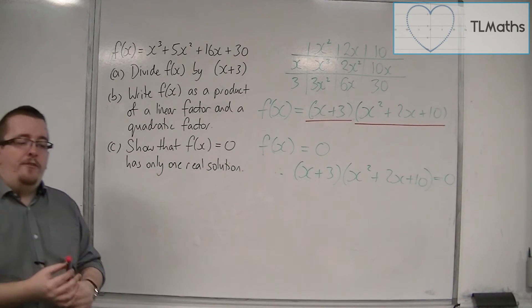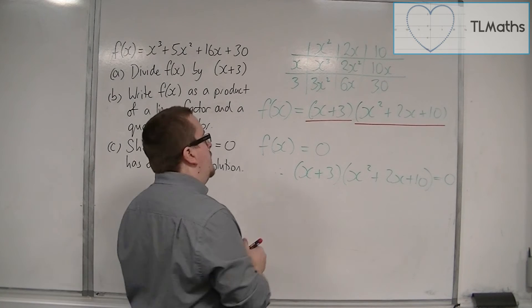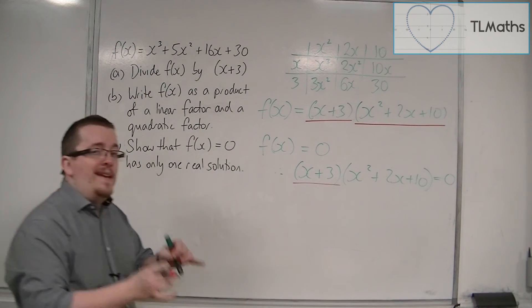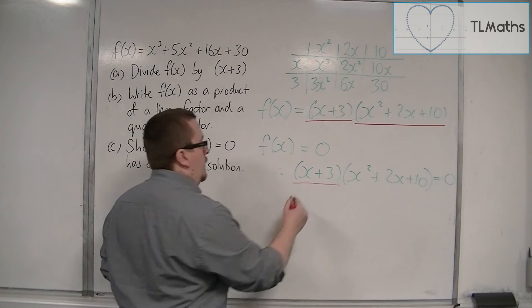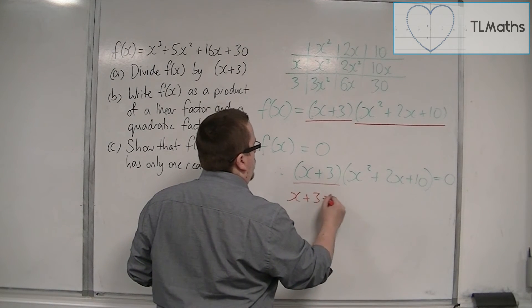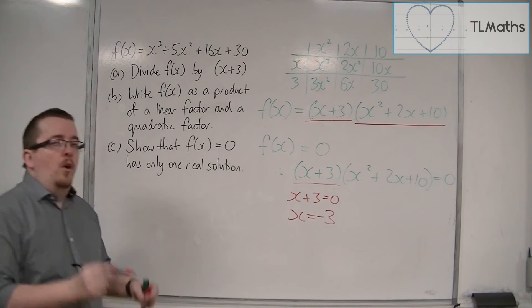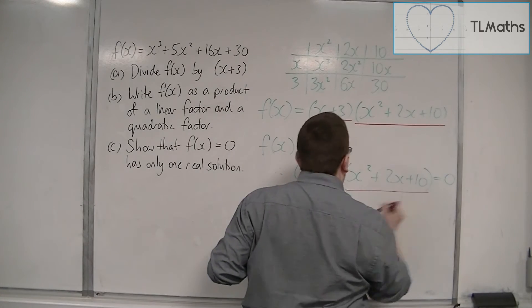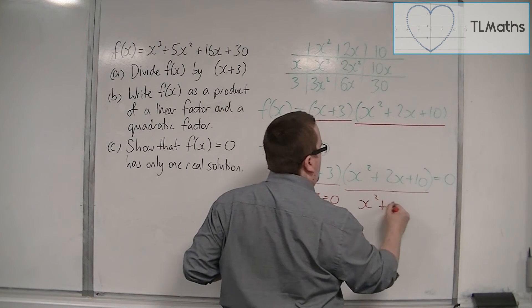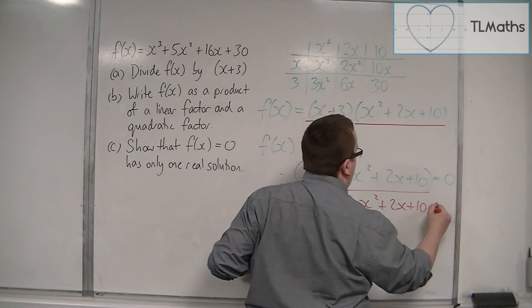Now if this equals 0, then either x+3 is 0, in which case x would be -3, or x²+2x+10 is 0.